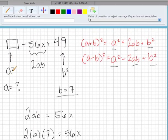And my first term in the box here is supposed to be a squared. So if I square 4x, I'll get 16x squared.